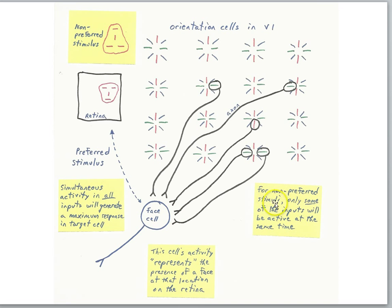For non-preferred stimuli, so a different face for example, only some of the inputs will be active at the same time. Remember, as soon as you start to take away some of the activity of some of these inputs, you get a reduced response. So a different face is going to cause some of these inputs to drop out.